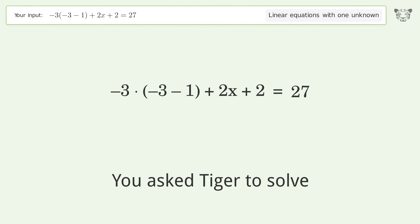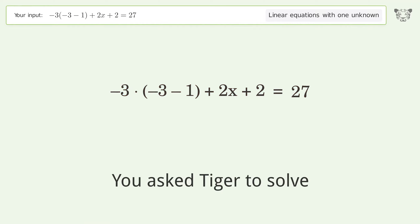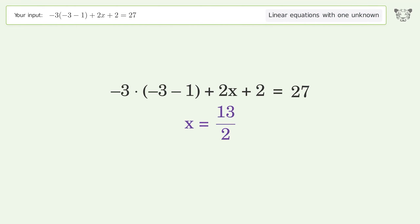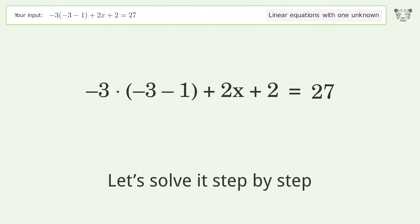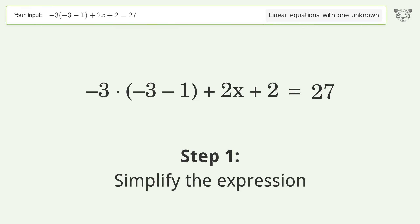We ask Tiger to solve this — it deals with linear equations with one unknown. The final result is x equals 13 over 2. Let's solve it step by step and simplify the expression.